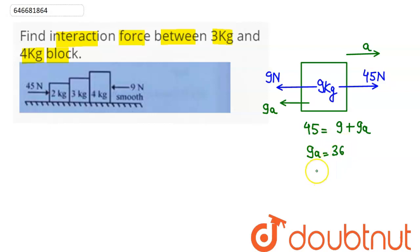Hence the value of 9a comes out to be 45 minus 9, which is 36. Hence acceleration comes out to be 4 meter per second square. So this whole system will be moving towards right with a common acceleration of 4 meter per second square.